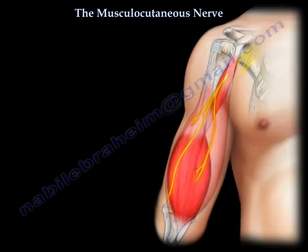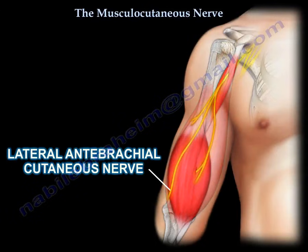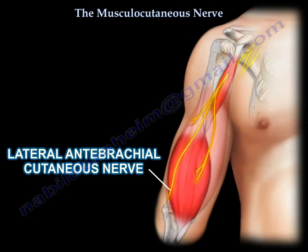The lateral antebrachial cutaneous nerve can be injured from venipuncture in the cubital fossa. It can also be injured during repair of a distal biceps tendon rupture, so this nerve must be visualized and retracted to avoid injury. If you cannot find the nerve distally, try to find it proximally underneath the biceps and in front of the brachialis, then track it distally to locate it before retracting.